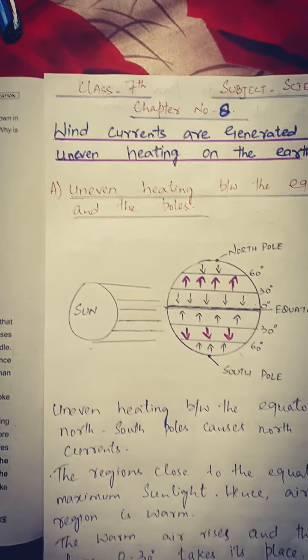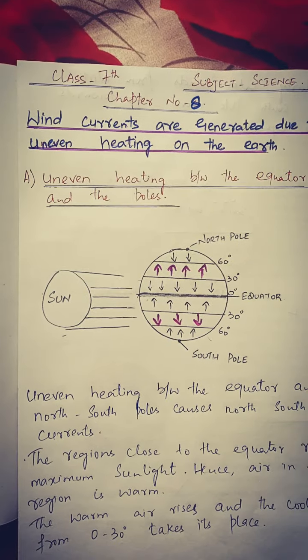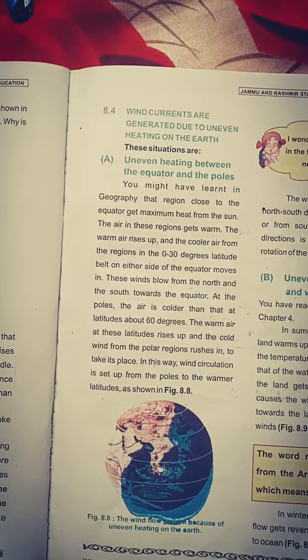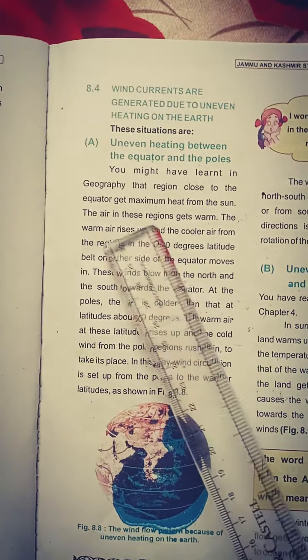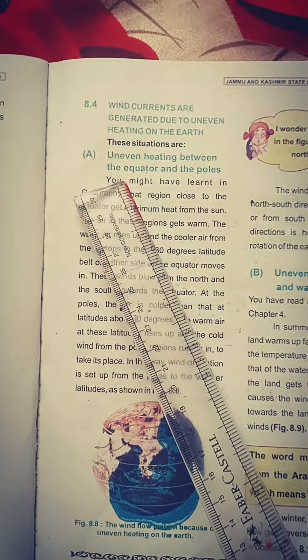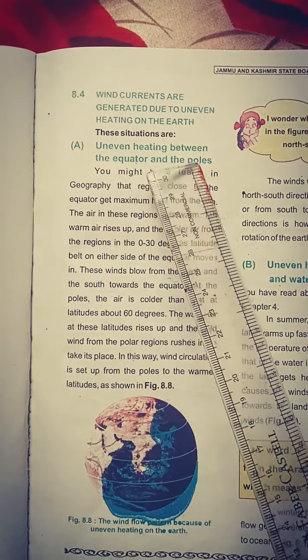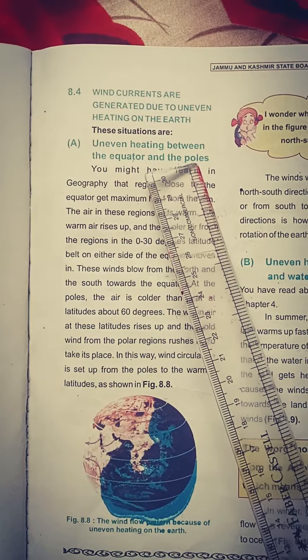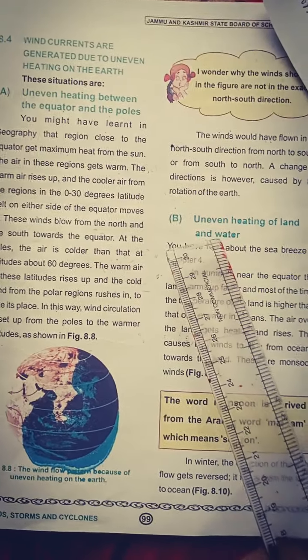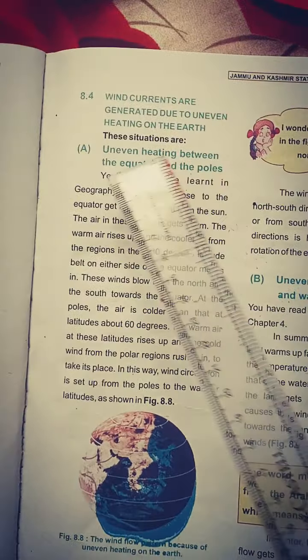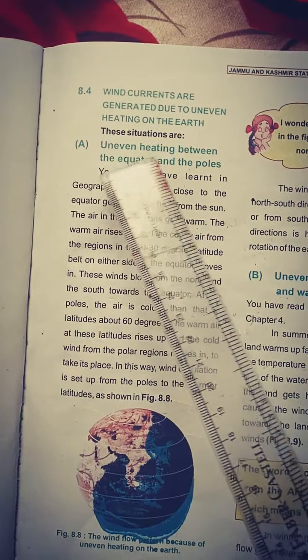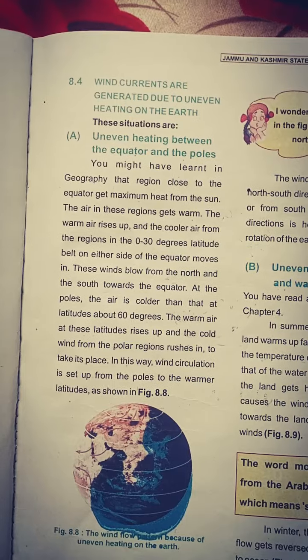Today we have to learn how wind currents are generated on the earth. There can be two reasons: one is uneven heating between the equator and the poles of the earth, and the other reason is uneven heating between the land and the water. Today we will study the details about uneven heating between the equator and the poles, and how it generates wind currents.